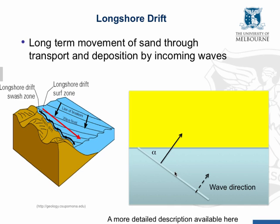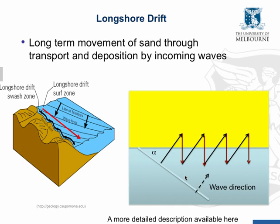As the water drains back off the beach — the backwash — it drains down the gradient of the beach. Assuming a roughly parallel beach face, it drains down in that direction. So sediment washed up by the swash is carried back down by the backwash to a new position. This repeats with each successive wave, producing the longshore sediment transport process known as longshore drift.